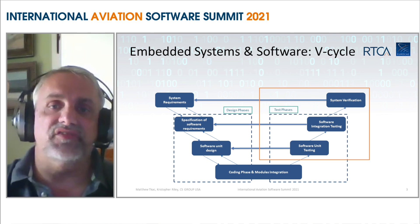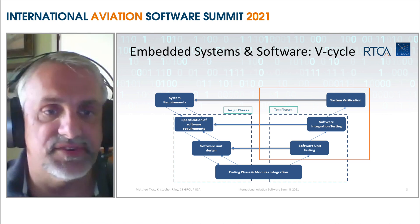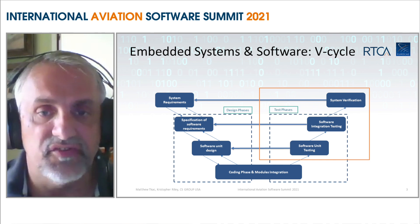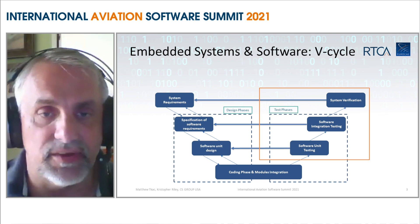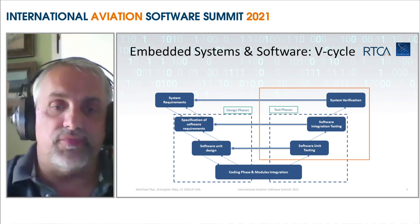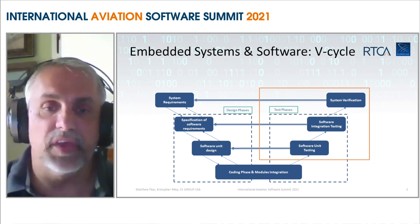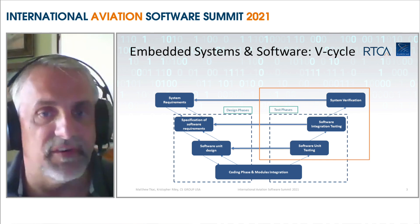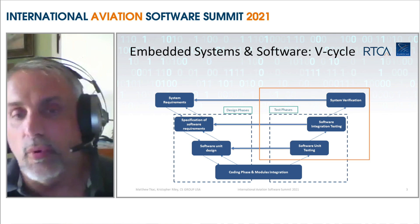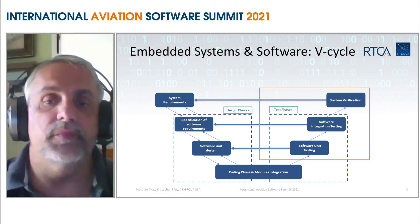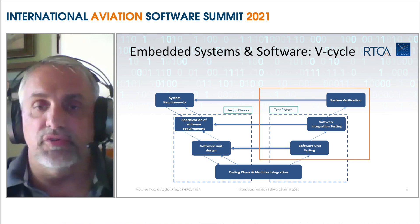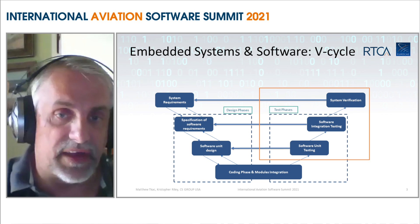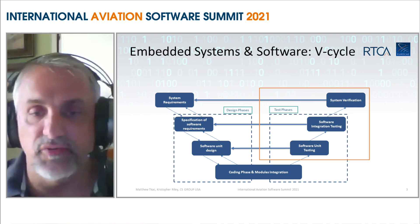When we look at the typical V-cycle for embedded systems and software, on the right-hand side we have software unit testing, software integration testing, and software verification testing within those phases. The chart implies a continuous building-up process from unit testing through integration and then verification testing. What we're really proposing here is using that data and reversing that flow — using the highest level possible testing and providing coverage and artifacts associated with each of those individual steps as we build forward.